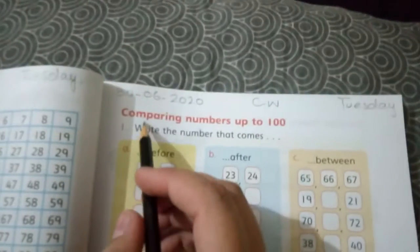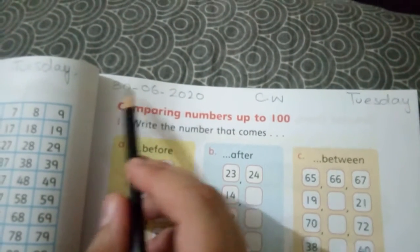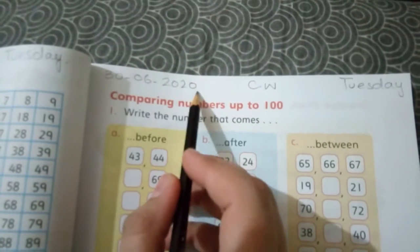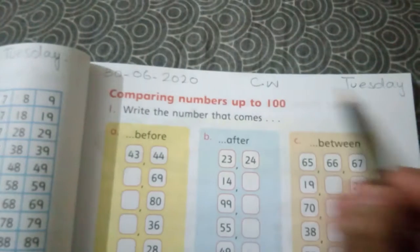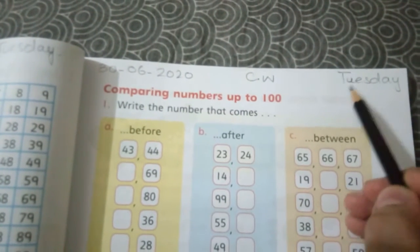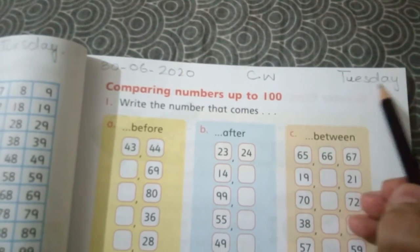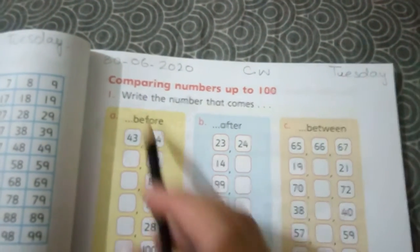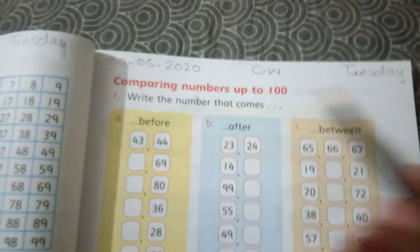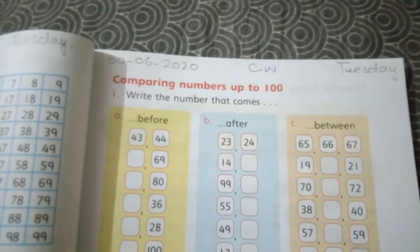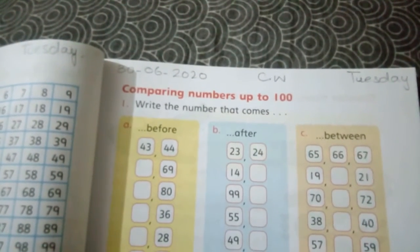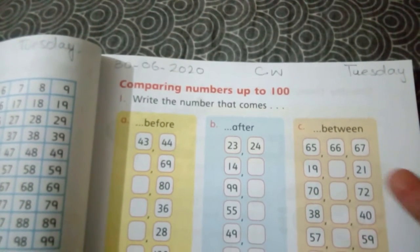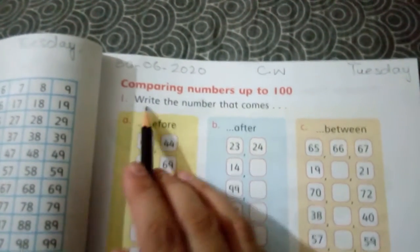Now come to the next page. Again you will write date: 30-06-2020, and classwork, then C.W. Then you will write Tuesday: T-U-E-S-D-A-Y on top right side. Comparing numbers up to 100. Now we will compare numbers - what number comes before, what number comes after, and what number comes between.